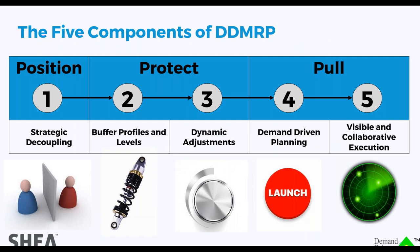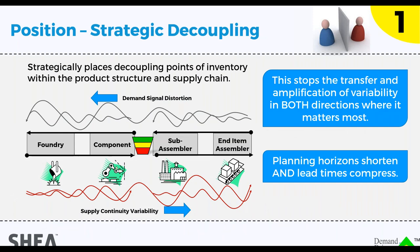Here are the five components of DDMRP — this is our implementation path and what we teach in training courses. Step one: strategically decouple. Then we set buffer profiles. Then we dynamically adjust — which most other systems don't do. We need something to turn your work orders and purchase orders, and we need something to trigger execution on distribution, replenishment, or manufacturing orders.